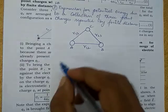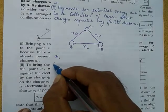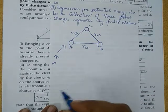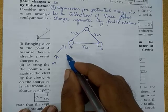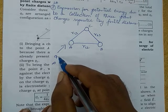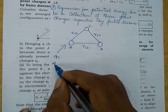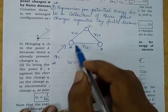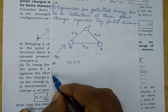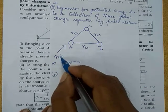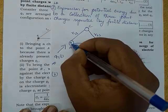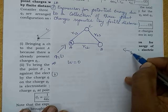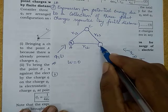First of all, I am moving the charge q1 from infinity to the point A. The work done needed for the charge to move from infinity to the point A will be 0, because no other charges are present nearby the point A. Then, q1 is fixed at A. I am moving the charge q2 from infinity to the point B.